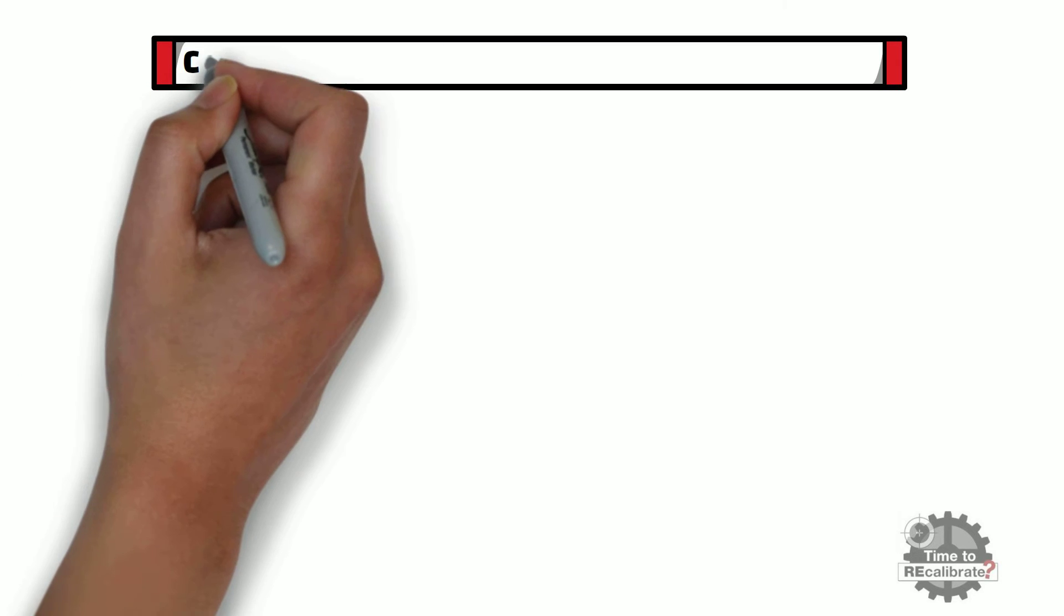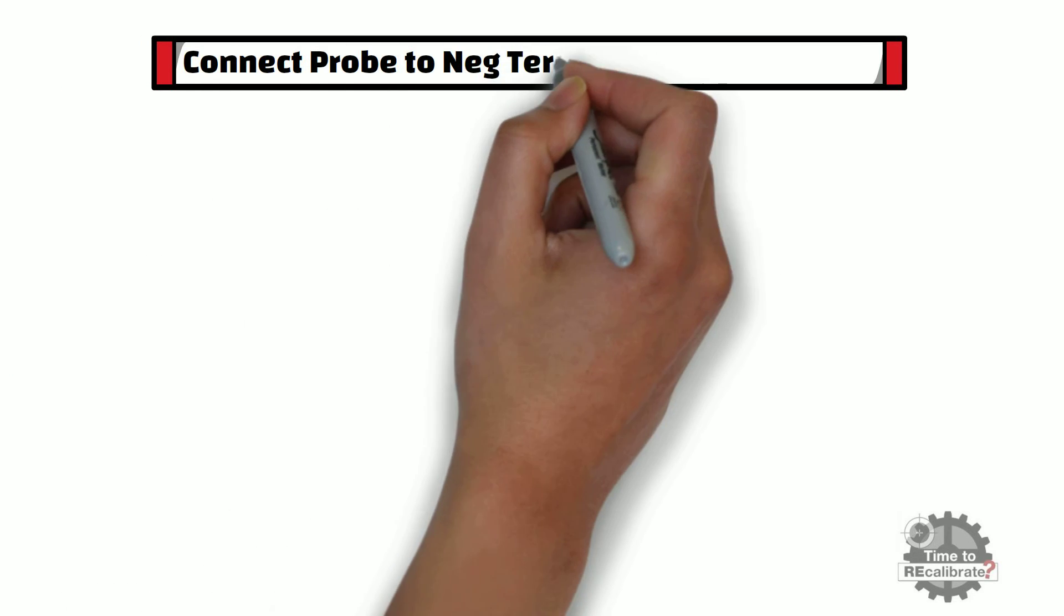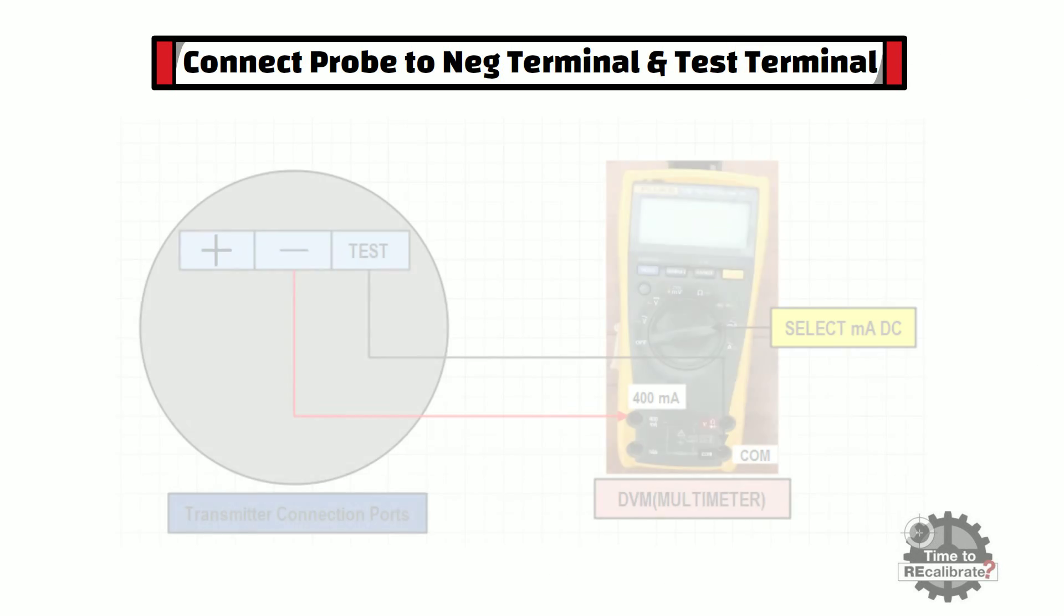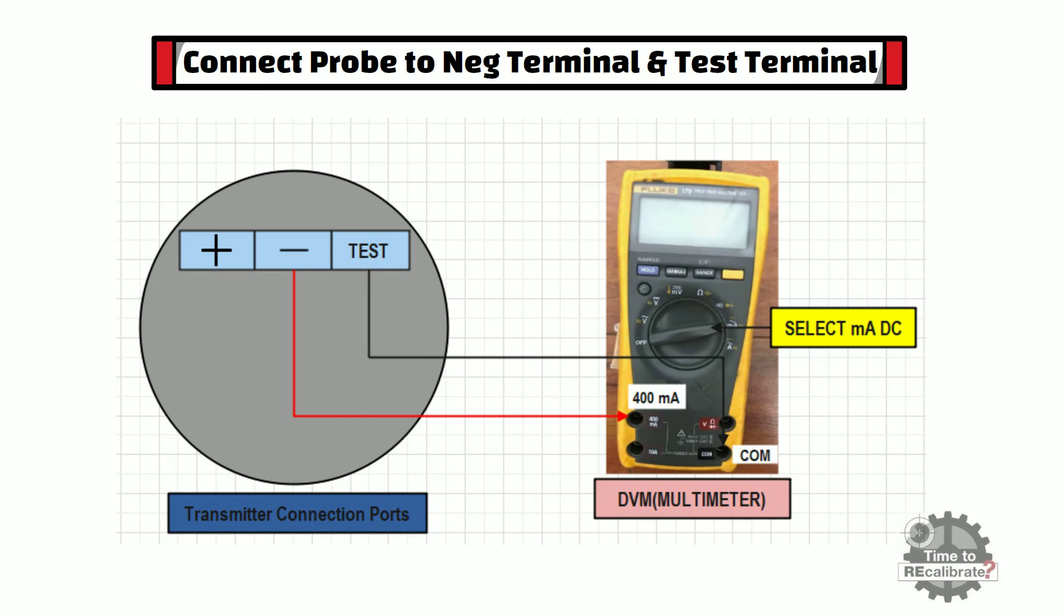In this method, we need to connect multimeter probe to negative terminal and test terminal of transmitter. As you can see from the diagram, this method is only applicable for transmitter which has test port.